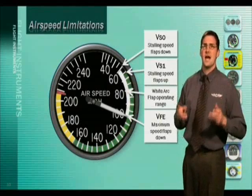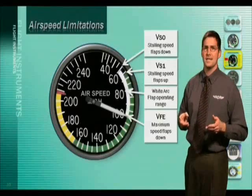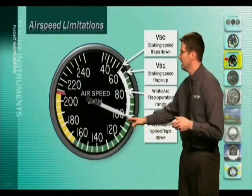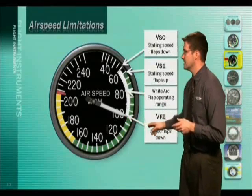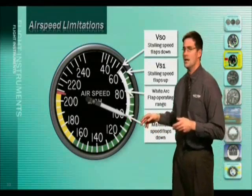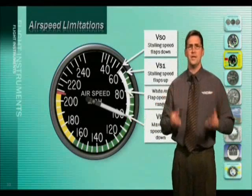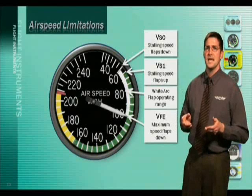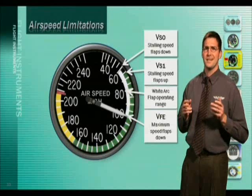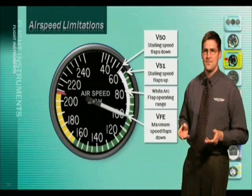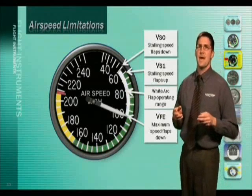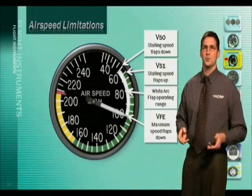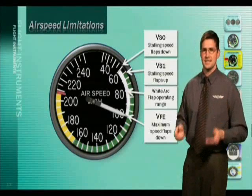At the top of the white arc is the airspeed limitation called VFE. The V is for velocity, the F is for flaps, and E is for extension. This is the maximum speed at which flight is allowed with the flaps extended.